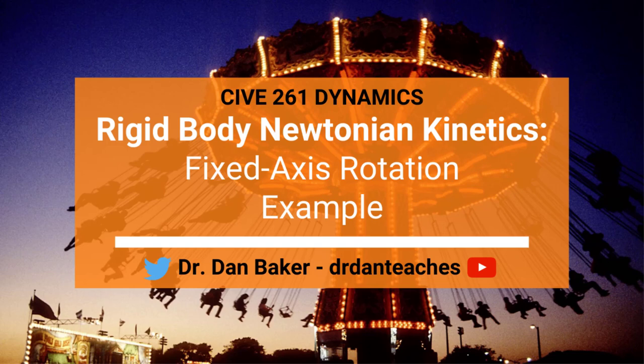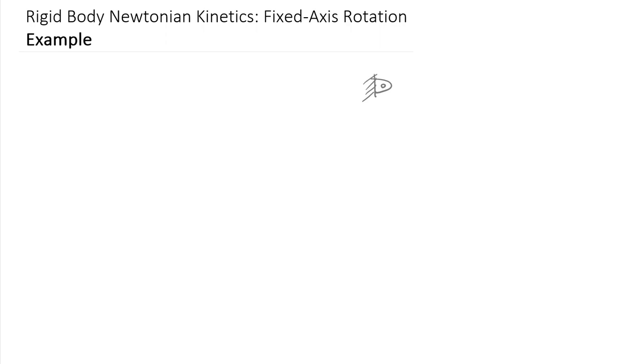Hello students of Dynamics. This is Dr. Dan Baker with an example video that's going to pick up where our overview video of rigid body Newtonian kinetics left off. And once again, we're looking at fixed axes rotation. The example we'll look at today involves a fixed axes pin on the left end, and a fairly simple rigid body — just a slender rod.